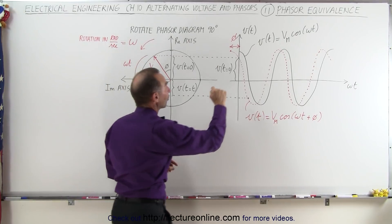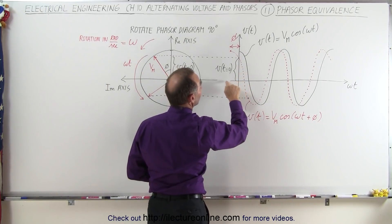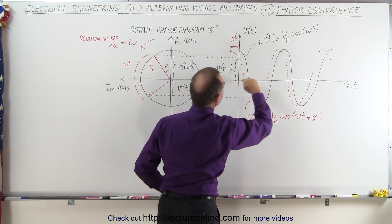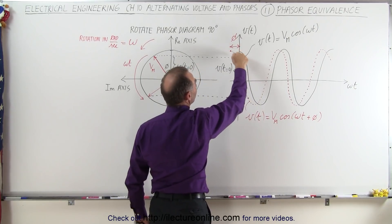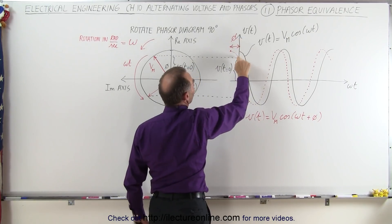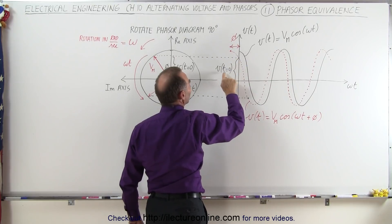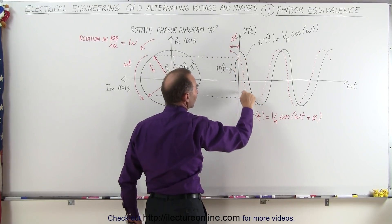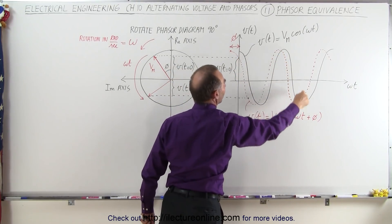You can see that the whole graph has been shifted by a certain phase angle right there, and the vertical distance from the horizontal axis, the omega t axis, to where the graph crosses the v of t, that would be the voltage at time equals zero, and then the voltage will change over time.